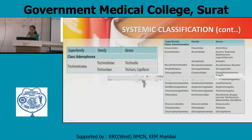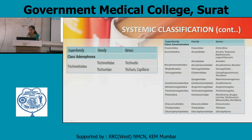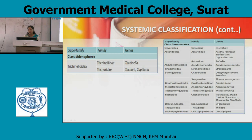Gnathostomatoidea: family is Gnathostomatidae and genus is Gnathostoma. Metastrongyloidea: family is Angiostrongylidae and genus is Angiostrongylus. Trichostrongyloidea: family is Trichostrongylidae and genus is Trichostrongylus. Filarioidea: family is Onchocercidae and genus includes Wuchereria, Brugia, Loa loa, Onchocerca, Mansonella, and Dirofilaria. Dracunculoidea: family and genus is Dracunculus. Thelazioidea: family and genus is Thelazia. Dioctophymatoidea: family is Dioctophymatidae and genus is Dioctophyma.